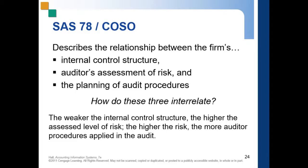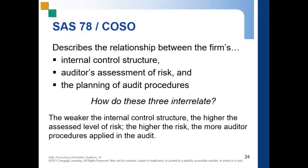How do these three interrelate? The weaker the internal control structure, the higher the assessed level of risk. The higher the level of risk, the more auditor procedures applied in the audit. If your internal control structure is weak — meaning it has many exposures or holes — your risk is higher. And if you have more risk, more audit procedures are needed to counter those exposures and risks.